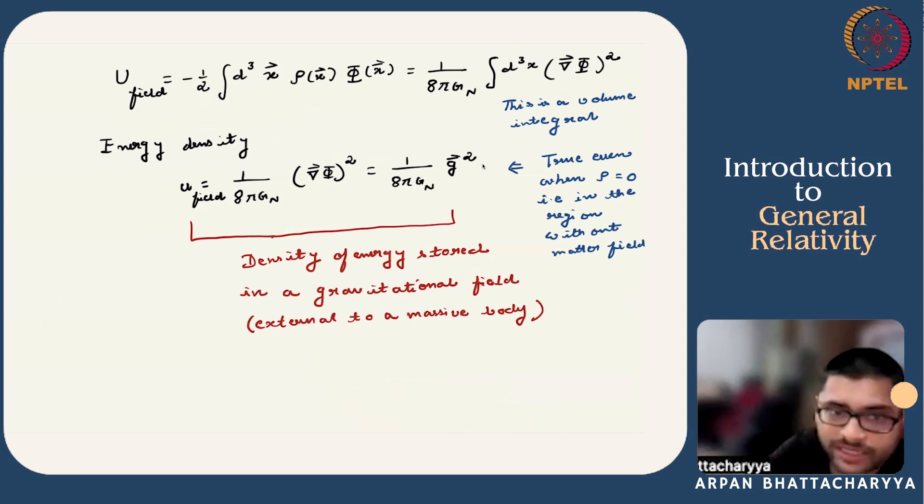Then we are left with only the second term. You can write down the energy stored in the gravitational field as a volume integral shown here. This is a volume integral, so you can define an energy density which is shown here. You can use the fact that the gravitational field g is del Φ and then rewrite this entire expression in terms of g². Once you do that, you can see that this is true even when ρ = 0, that is in a region without any matter field. That is why we call this the energy stored in the gravitational field. Later, we will derive it more systematically and match with our relativistic expression by taking the appropriate limit. Keep this in mind as a useful check later on.